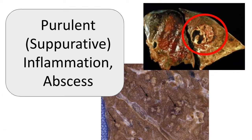Purulent, or suppurative inflammation, is characterized by the production of pus. Pus is an exudate which consists of neutrophils, the liquefied debris of necrotic cells, and edema fluid. The most frequent cause of this type of inflammation is infection with bacteria that causes liquefactive tissue necrosis. These pathogens are referred to as pyogenic, or pus-producing, bacteria.